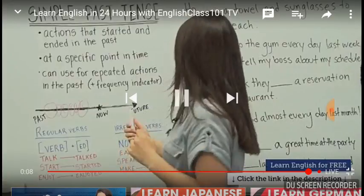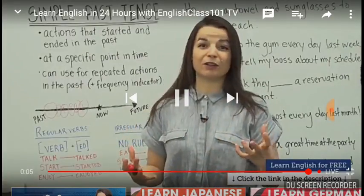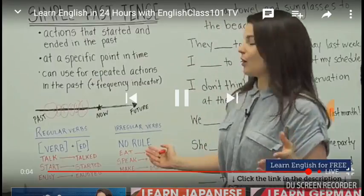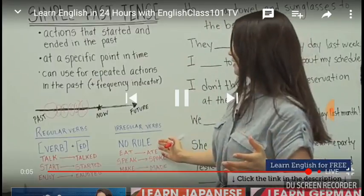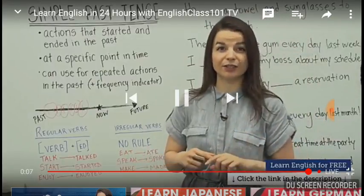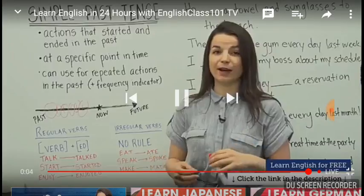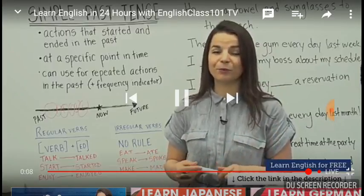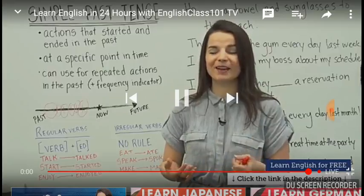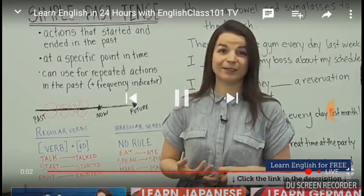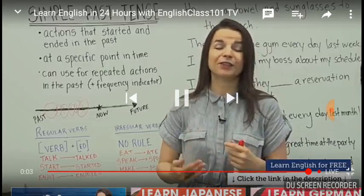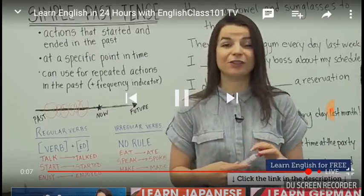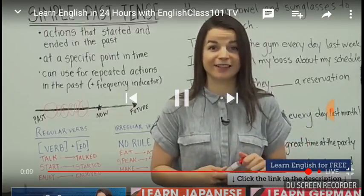But some verbs are irregular verbs. Irregular verbs do not have a simple rule for understanding past tense conjugation — how to change them in past tense. There's no rule for these; you simply have to practice. You have to remember them, read them, listen to them, until you can remember the correct conjugation — the correct way to change these verbs into the past tense.